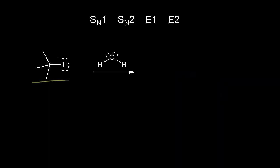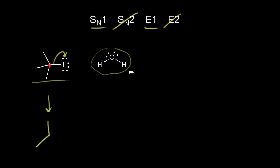Here is the same tertiary alkyl halide from the previous problem, so SN2 is out. The reagent is water — a weak nucleophile and a weak base. Since water is a weak base, the E2 reaction is out. That leaves both E1 and SN1, which both proceed via a carbocation. We form the carbocation by having the electrons come off to form the iodide ion, taking a bond away from the carbon in red to give a tertiary carbocation with a plus one formal charge.